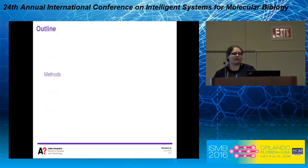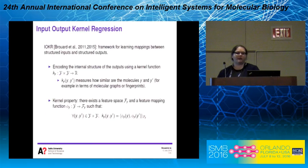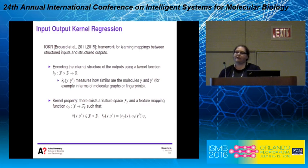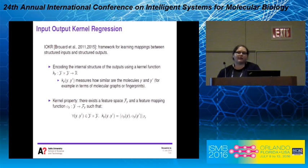I will now present the method we used in this work. We decided to use an input-output kernel regression approach — a framework for learning mappings between structured inputs and structured outputs, such as tree data or graph data. In order to encode the internal structure of the output, in the case of a molecule, this method uses a kernel function k_y. The value of this function measures how similar two molecules y and y' are — for example, using the molecular fingerprint or molecular graph. Using this kernel, we can benefit from the kernel property, which tells us there exists a feature space F_y and a function phi_y that maps the output to this feature space, so all kernel values can be written as inner products in this space.